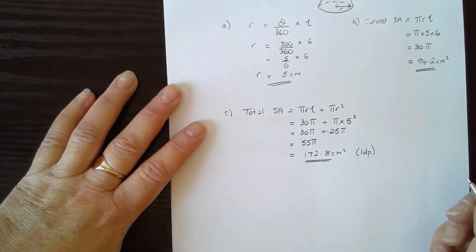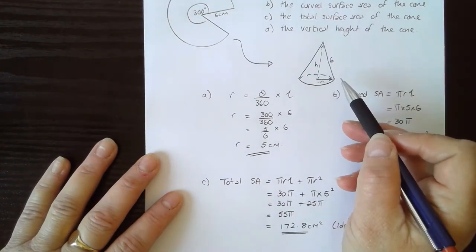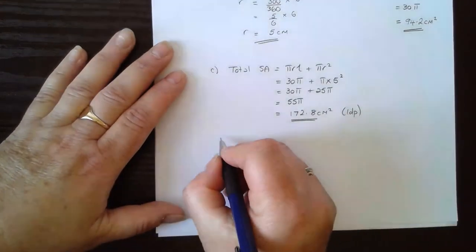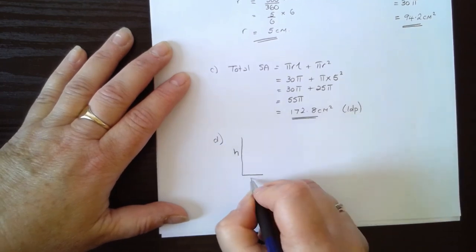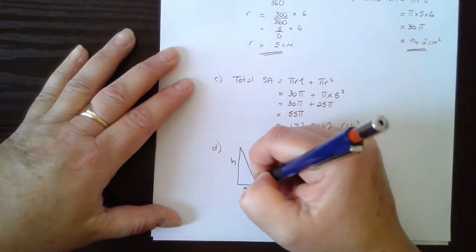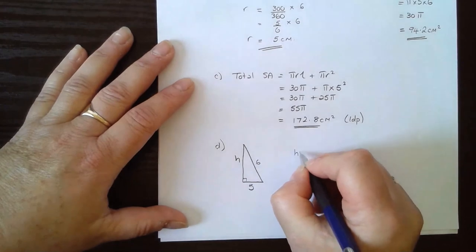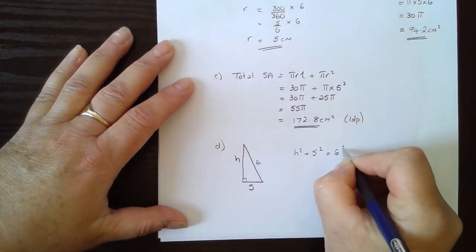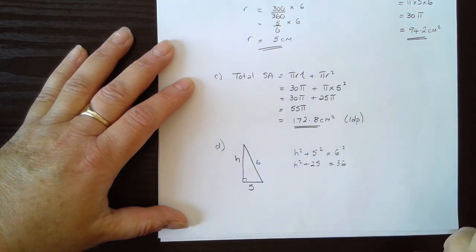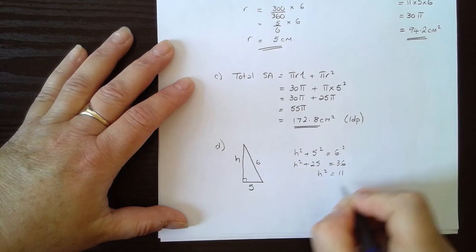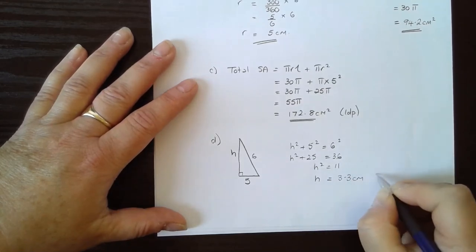And then the last part, the vertical height. I now know that the radius is 5 and the sloping side is 6, which means we are back to using Pythagoras's theorem. Taking that right-angle triangle out, where h is the height, the radius is 5, and the sloping side is 6: h squared plus 5 squared is equal to 6 squared, so h squared plus 25 equals 36, h squared equals 11, and h equals the square root of 11, which is 3.3 centimeters to one decimal place.